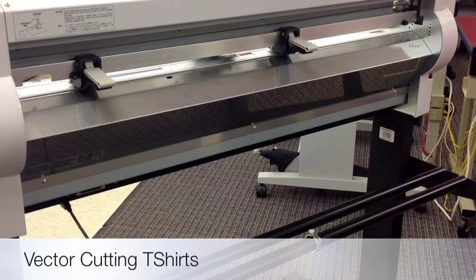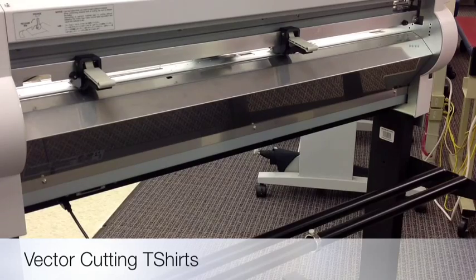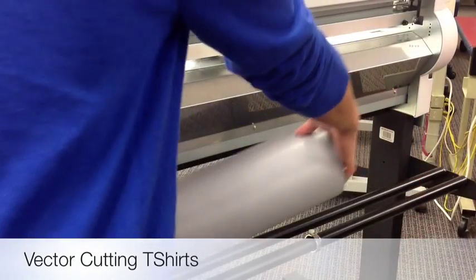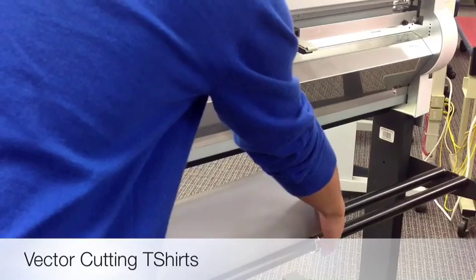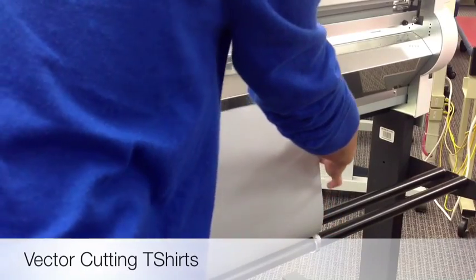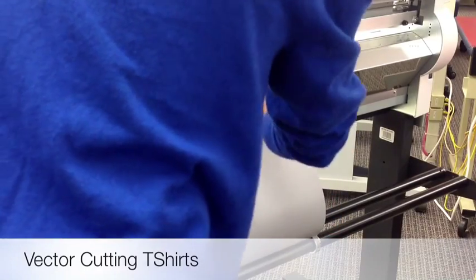You then replace the vinyl with the vinyl that you're going to cut. In this case, we're using a t-shirt vinyl. Place the vinyl on the two rungs on the bottom, lining them up with the guides, and then slide the vinyl through the back of the machine.